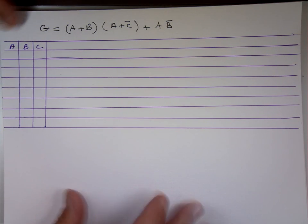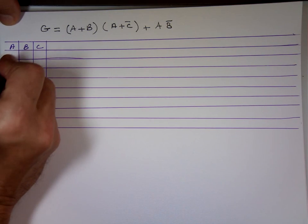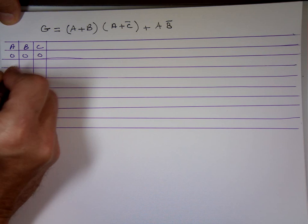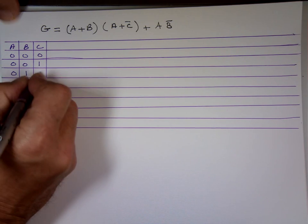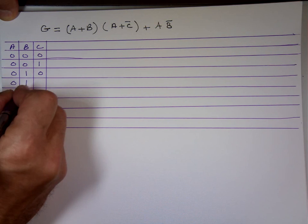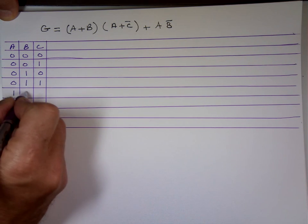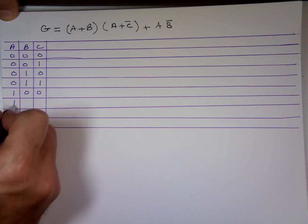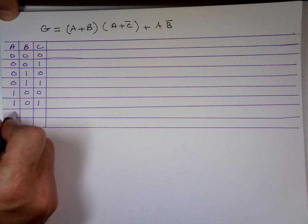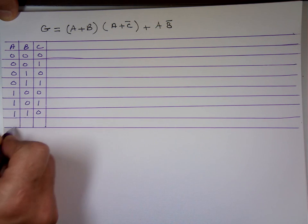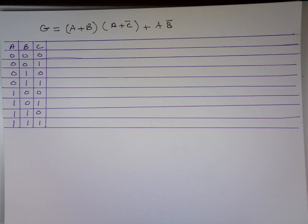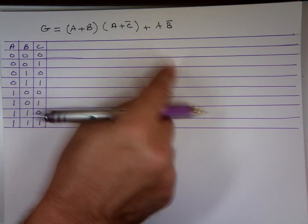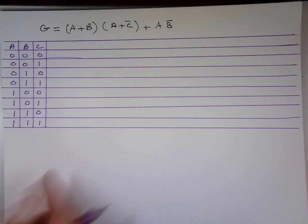Let's write the values for A, B, and C. The combinations are: 0,0,0 — 0,0,1 — 0,1,0 — 0,1,1 — and so on for all eight rows. There are three inputs A, B, and C, which means eight combinations. Two to the power of three is eight. The pattern for C alternates every bit: 0,1,0,1,0,1,0,1. B alternates in pairs: two zeros, two ones. A alternates in groups of four: four zeros, four ones.